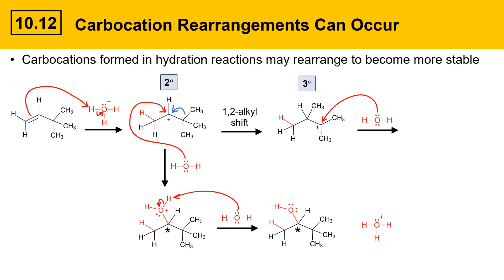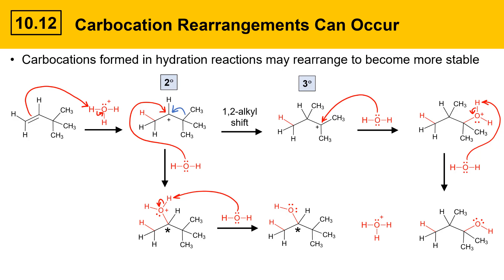Water then attacks the rearranged tertiary carbocation to give an intermediate, which is deprotonated by water in a subsequent step to give a neutral alcohol where the carbon skeleton looks significantly different. When you generate a carbocation intermediate in a hydration reaction, check for 1,2-alkyl shifts and 1,2-hydride shifts. The major product arises from the rearranged carbocation, and the minor product came from the initial carbocation.